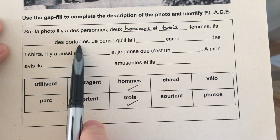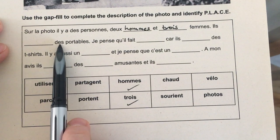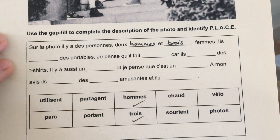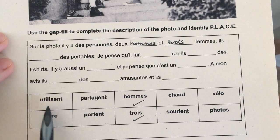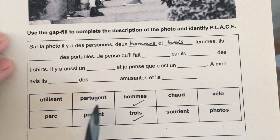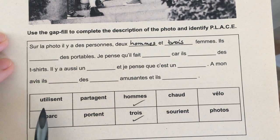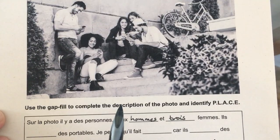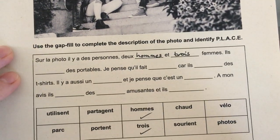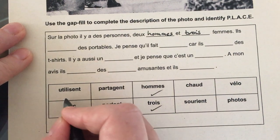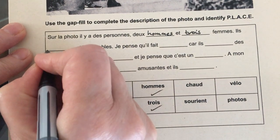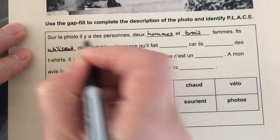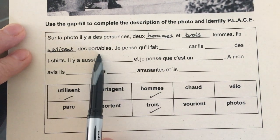'Ils something des portables' — they something some phones. Down here I've got some verbs. I'm talking about 'they', so it's the verbs that end in ENT. Are they sharing their phones? No, because they've each got their own phone. So it's obviously going to be 'ils utilisent' — they are using. They are using phones.